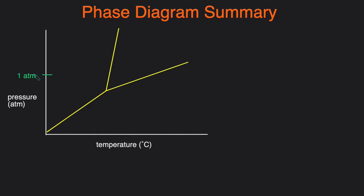A phase diagram shows what phase will exist at a particular pressure and temperature. On the y-axis you have pressure, typically in ATMs, and on the x-axis you have temperature, usually in degrees Celsius or degrees Kelvin. Typically you'll see three lines that separate the diagram into the three phases.